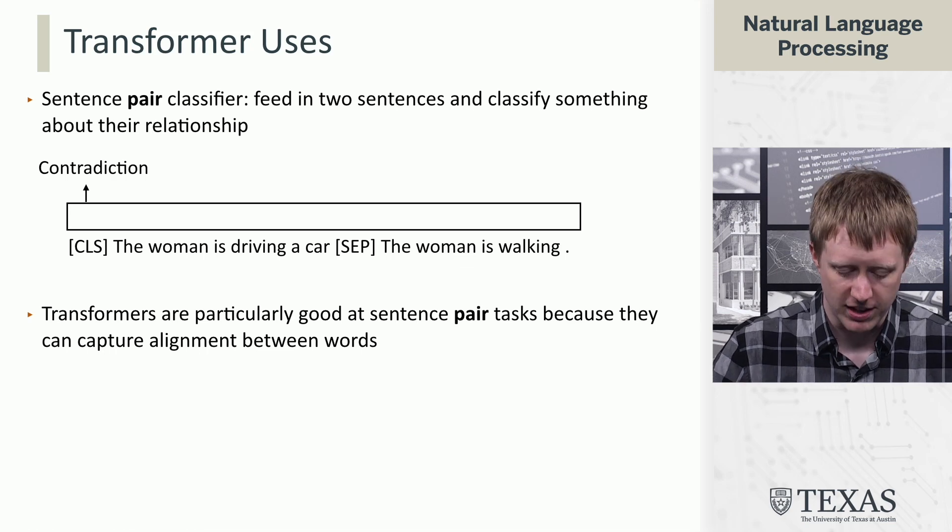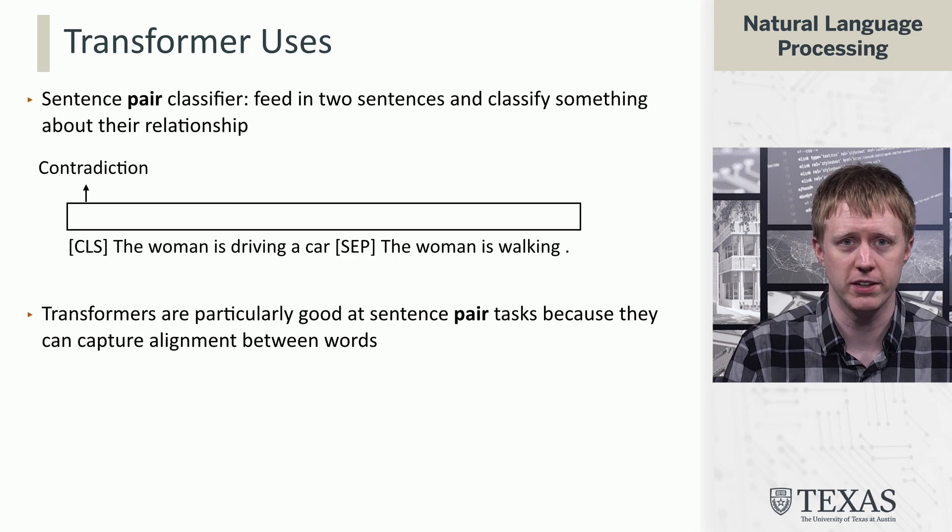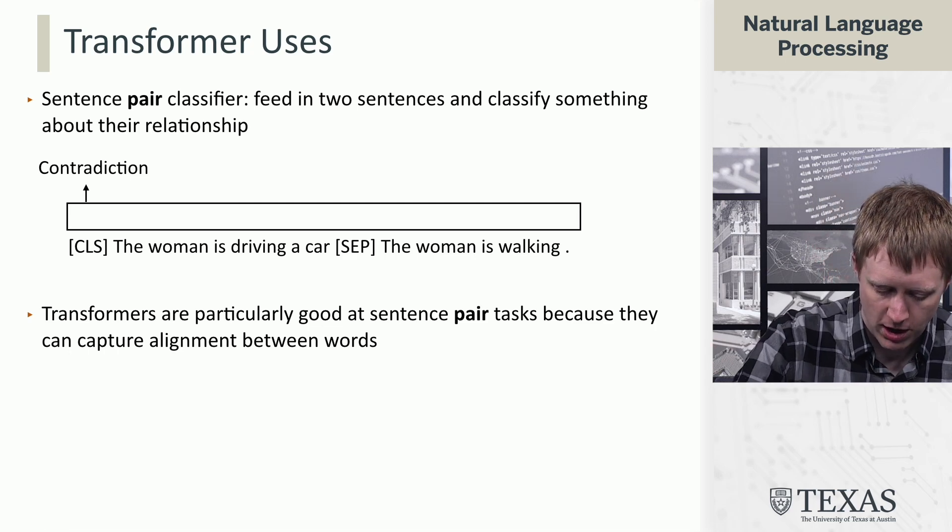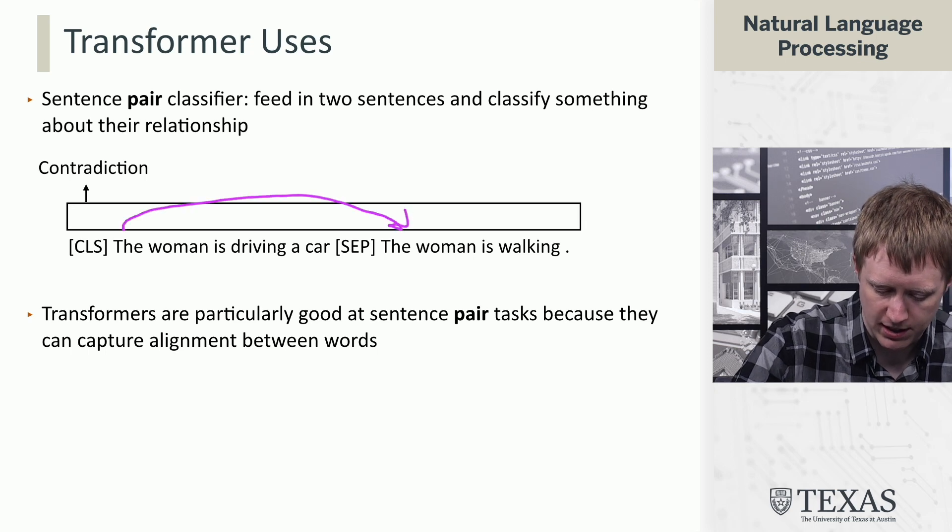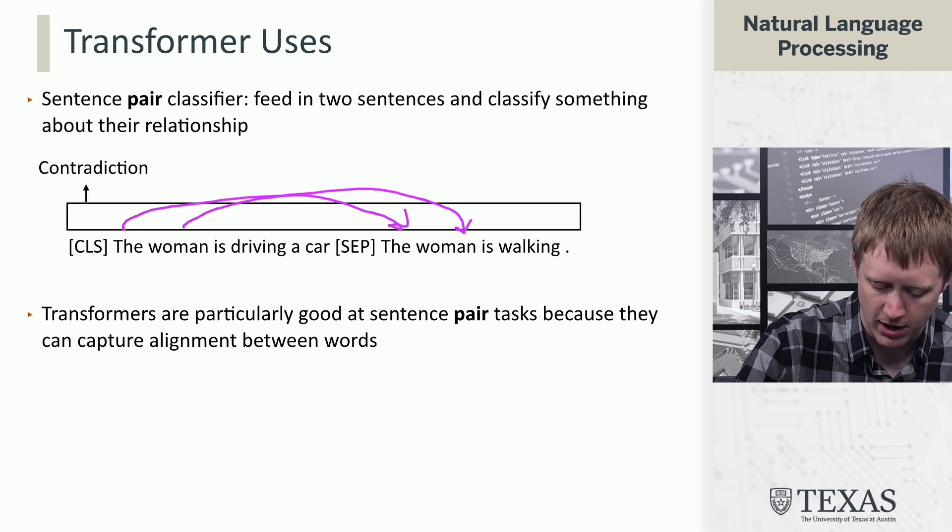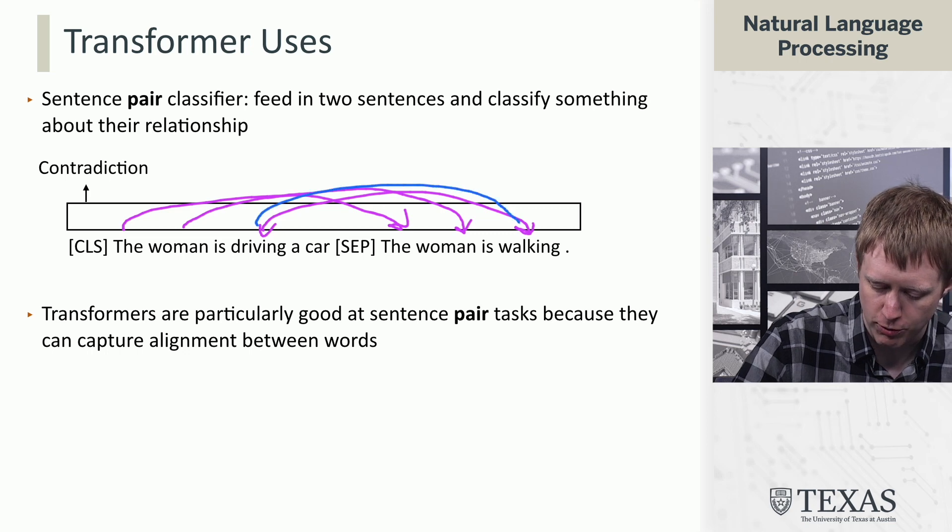Transformers are really good at this partially because the self-attention mechanism gives them so much flexibility to do computation anchored to all these different tokens. For example, you can get each of these words sort of attending to each other and then maybe you'll get driving and walking mutually attending. And over a few layers of the transformer computation, the model will really figure out,